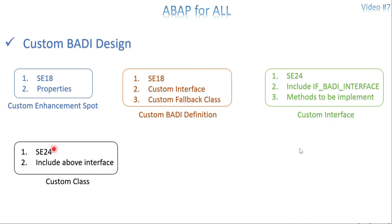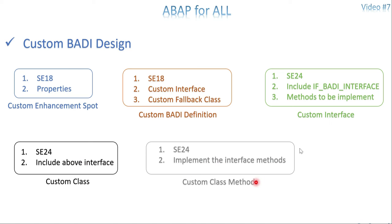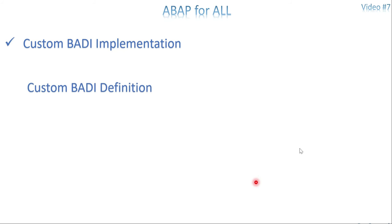Create a class through SE24 and include whatever interface you created. Automatically it will take IF_BADI_INTERFACE as well. Whatever methods you define in the interface are automatically listed in your custom class. If you want to implement any methods, just do it in your custom class. These are the steps to make your BADI definition active. Apart from this, the properties of your BADI definition are: multiple use, filter, AMDP, object creation, fallback class, and example classes - everything is enabled for you on a custom BADI.